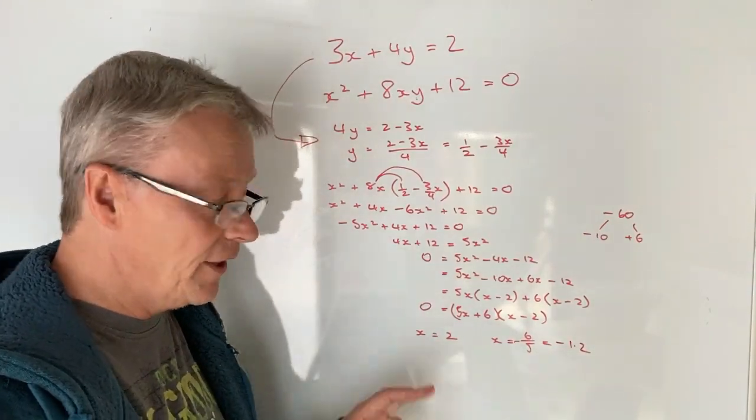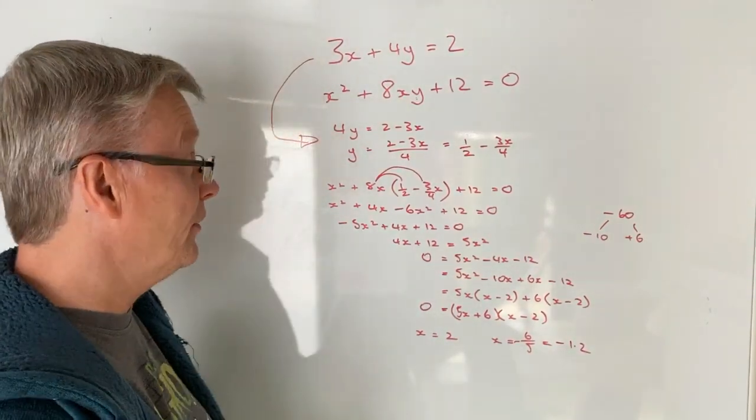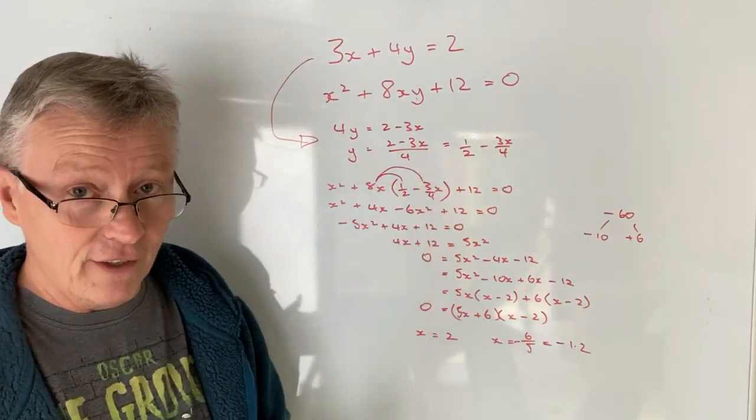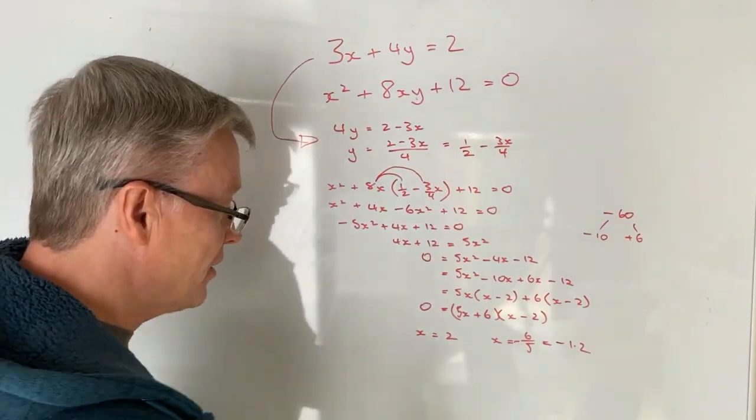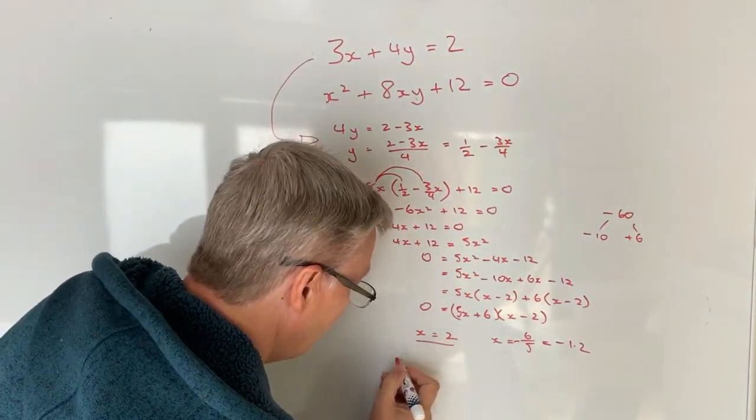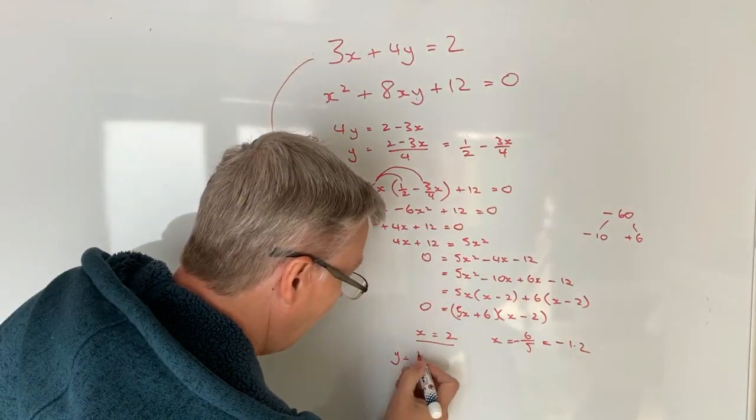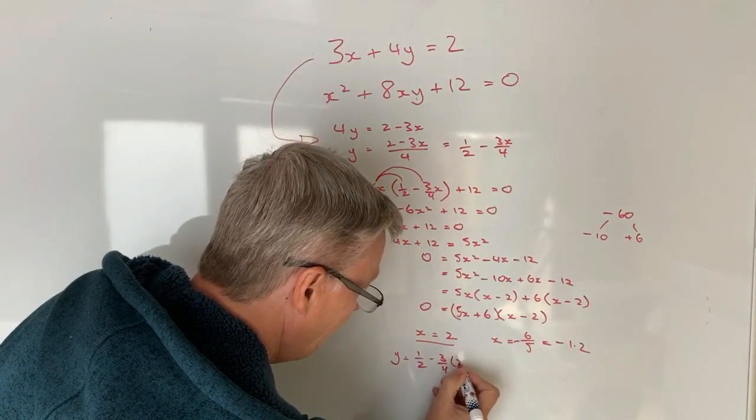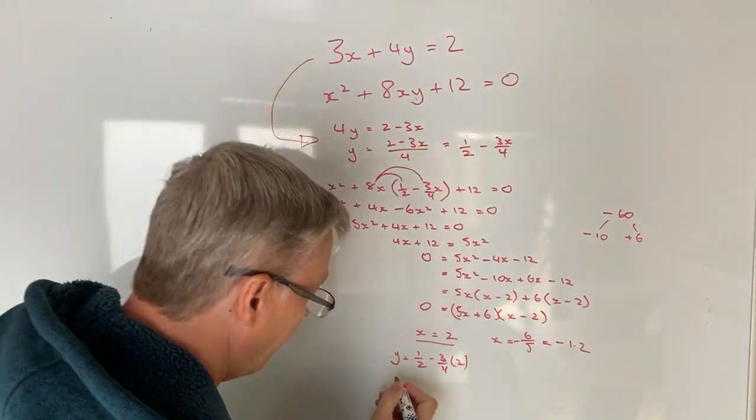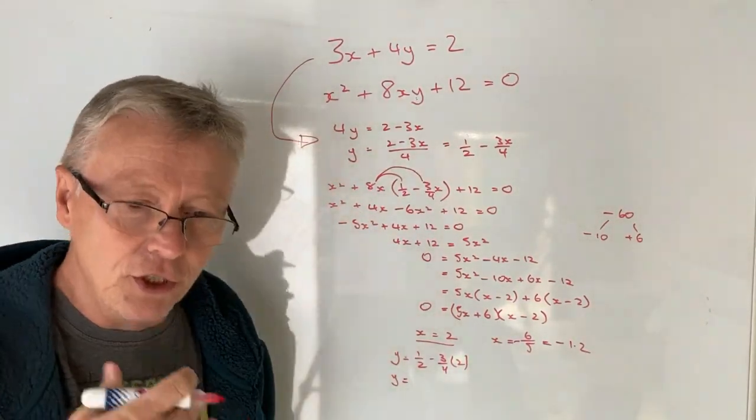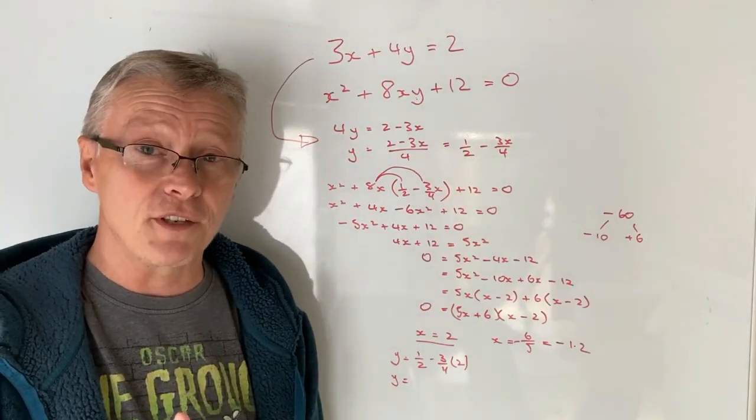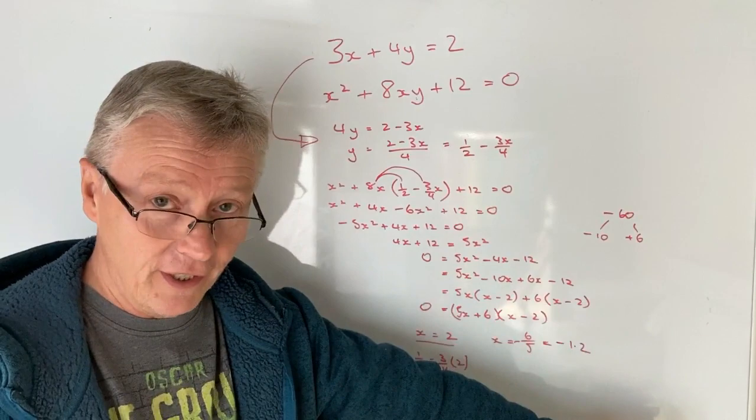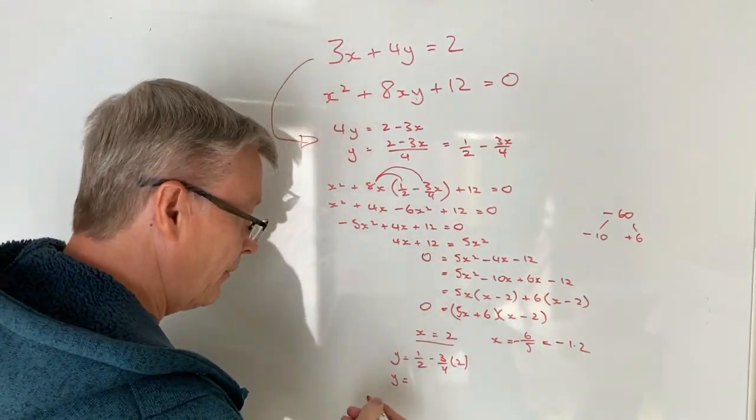Because now we've got our two values of x we need to plug them into our equation for y which is this one here and figure out the values of y. So when x equals 2 y is going to equal a half minus 3 over 4 multiplied by 2. And if I pop that through and again your working might be slightly different to my working. Please do use a calculator or do your working at the side of the screen or side of your paper or whatever it might be. You should get a value of y of minus 1.